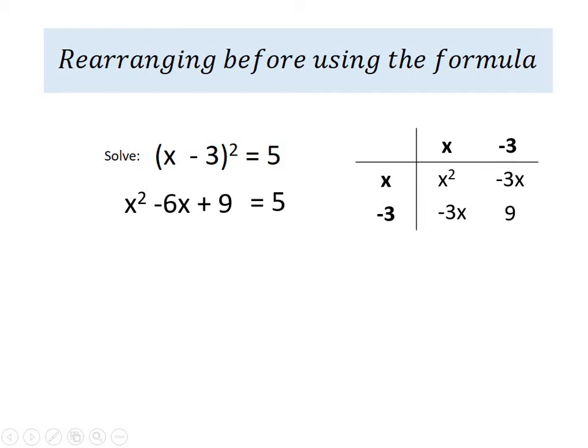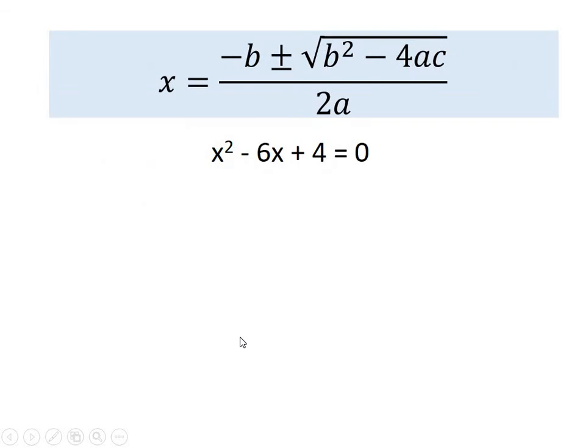I then need to rearrange this to get the 5 over to this side so that the whole equation equals 0. So when I take the 5 over to the other side, it becomes the inverse so it becomes a negative 5. And I can simplify that with x squared minus 6x plus 4 equals 0. So I've expanded the brackets and rearranged it to get everything all over on one side. And now I can solve it using the equation.